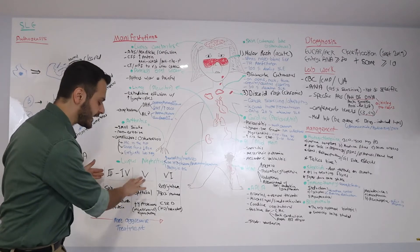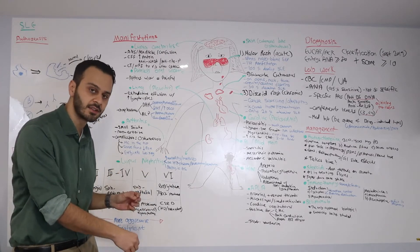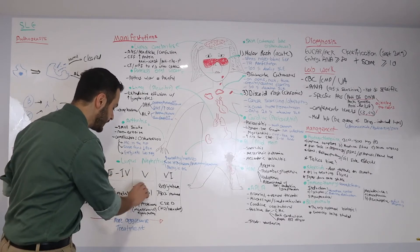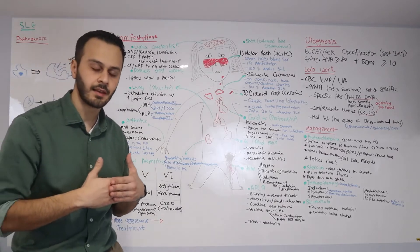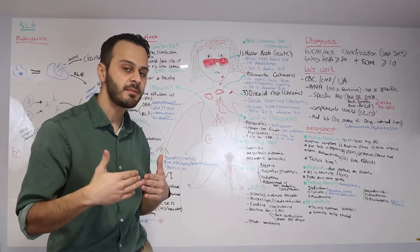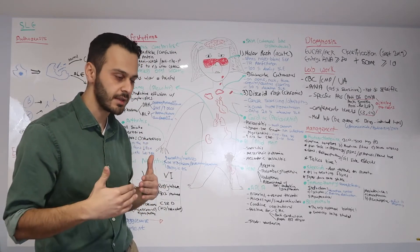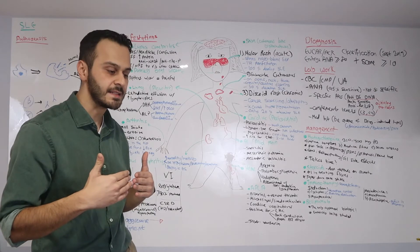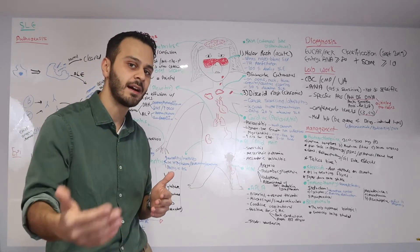Moving on to class 5, which is very unique. Once these immune complexes start to deposit themselves in the subepithelial layer, this becomes a problem. The subepithelial layer is very close to the basement membrane, which is a very valuable part of the glomerulus and is the main barrier to all those proteins from leaking out into the urine.